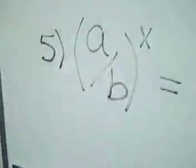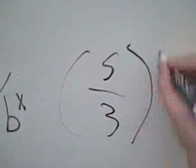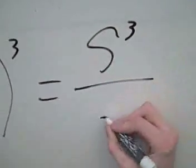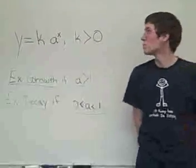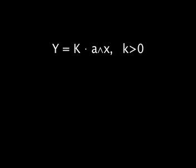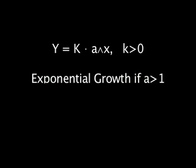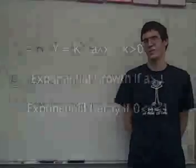The fifth rule is a over b to the x equals a to the x over b to the x. So 5 over 3 cubed is the same thing as 5 cubed over 3 cubed. One more thing you need to know regarding exponentials is the number e, which is a really long irrational number, but just remember it is a number and you will use it quite a lot throughout the year. This is the general form of an exponential function: y equals k times a to the x, where k, a constant, has to be greater than 0. The two forms would be growth if a is greater than 1, or decay if a is between 0 and 1. An example of decay would be half-life, where a would equal one-half.